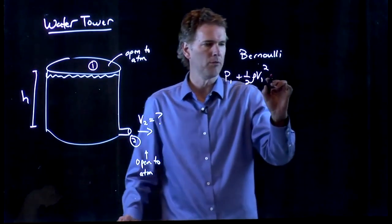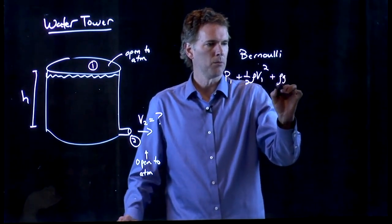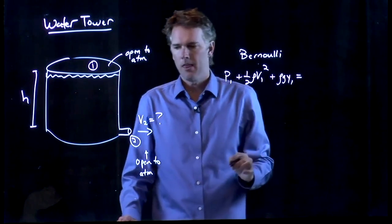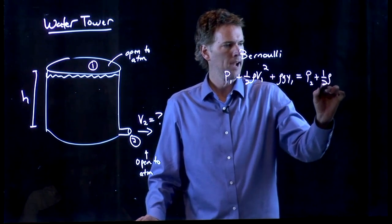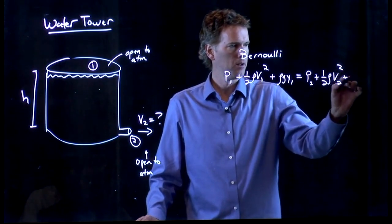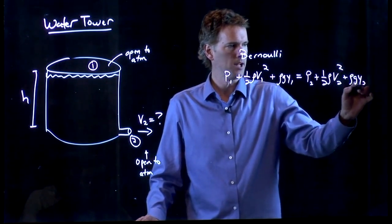P1 plus one half rho V1 squared plus rho GY1, that has to equal P2 plus one half rho V2 squared plus rho GY2.